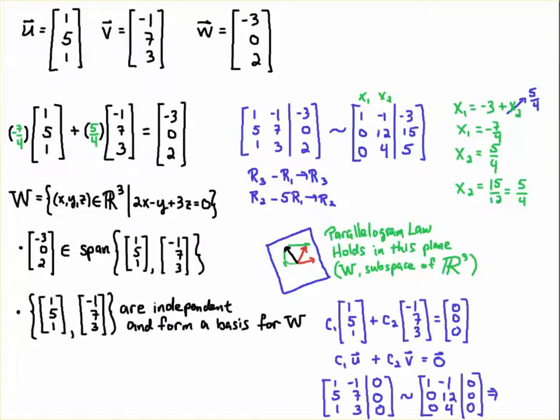So the parallelogram holds in this plane. And W is a subspace of R3. So that's what it means to be in the span. Now let's push that concept a little bit further. These vectors, U and V, are independent. You can check that by writing this linear combination. So I have C1 times U plus C2 times V equals zero. And if the only solution to this system of equations is C1 is zero and C2 is zero, then these vectors are linearly independent. So I write this set of equations here as a matrix equation and write as an augmented matrix. I do the row reduction,